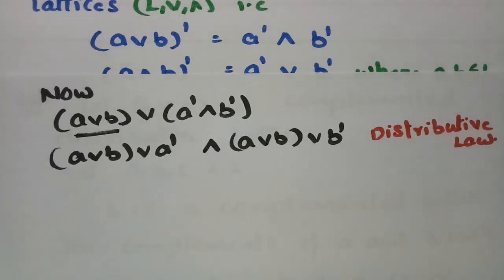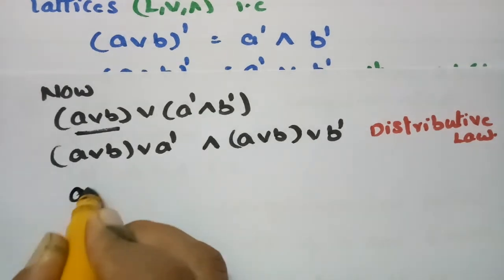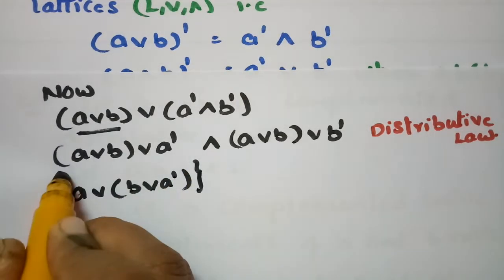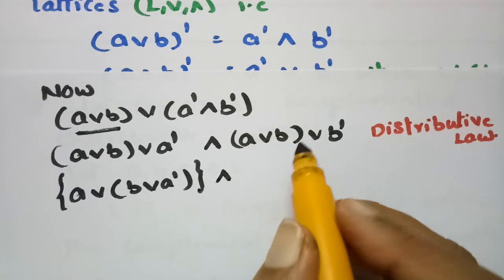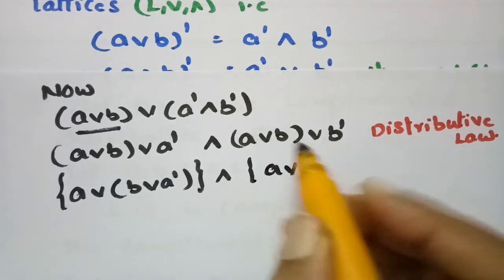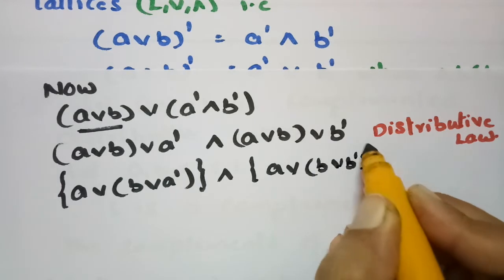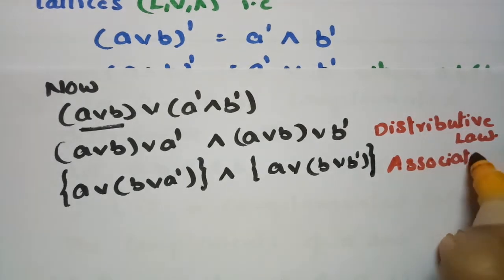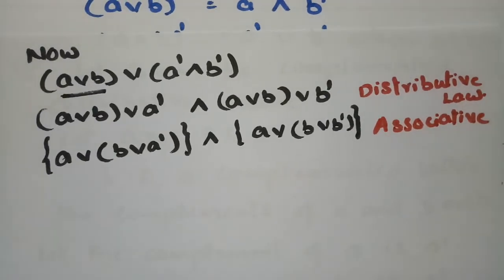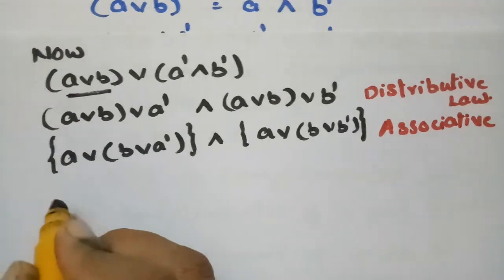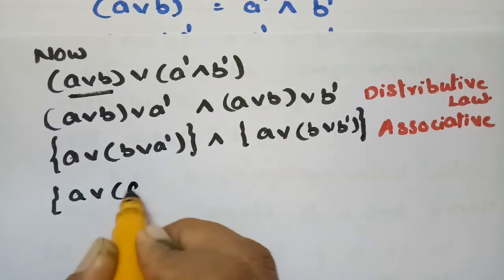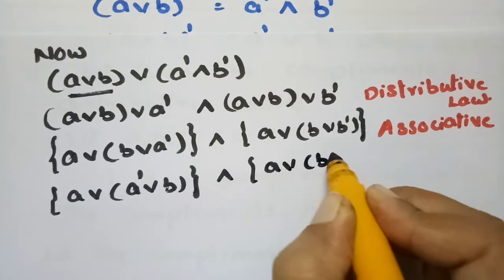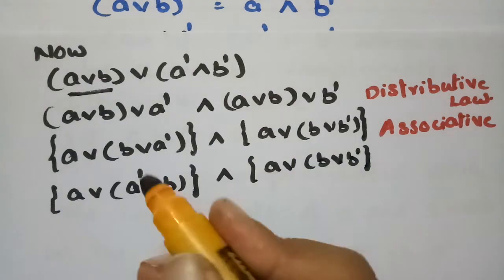Now applying the associative law, we rearrange the brackets: (A∨A'∨B) ∧ (A∨B∨B'). Then applying the commutative law, we get: (A'∨B∨... this is A∨A'join∨B) ∧ (A∨B∨B').